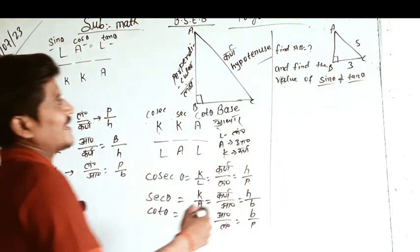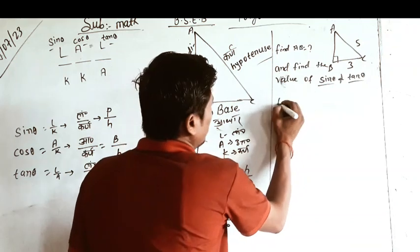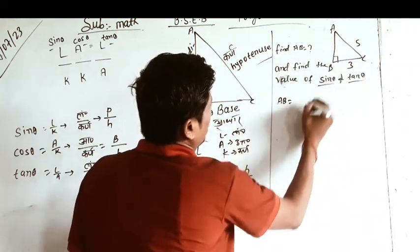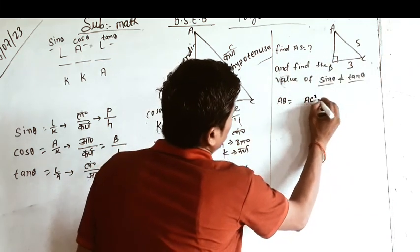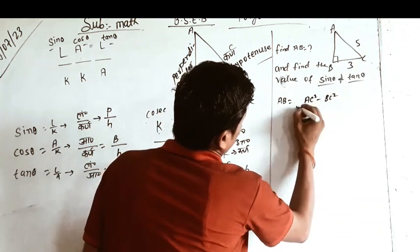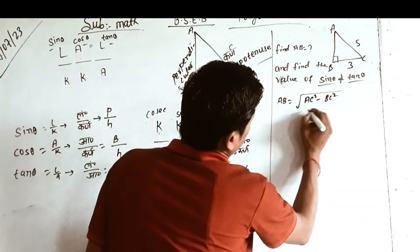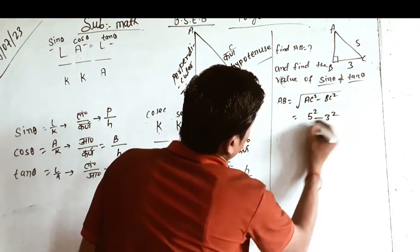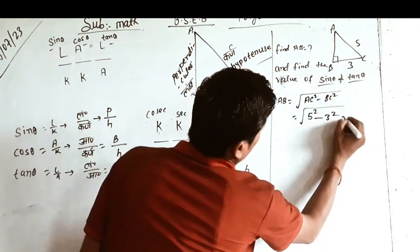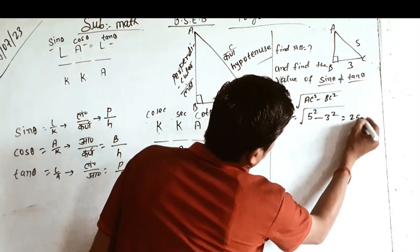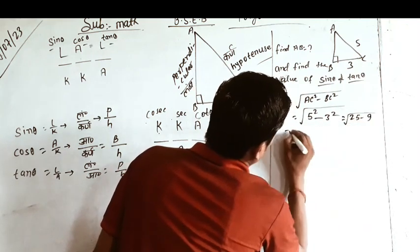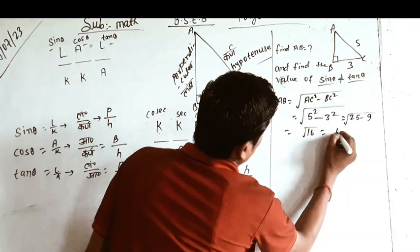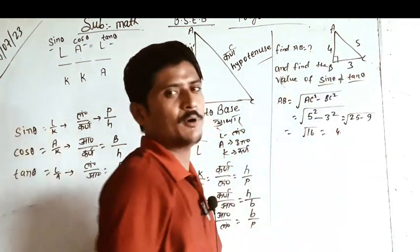As we know, first of all AB perpendicular is removed from AC squared minus BC squared. So this is square root of AC squared minus BC squared. AC is 5, so 5 squared is 25. BC is 3, so 3 squared is 9. 25 minus 9 is 16. Square root of 16 is 4. So AB is 4.